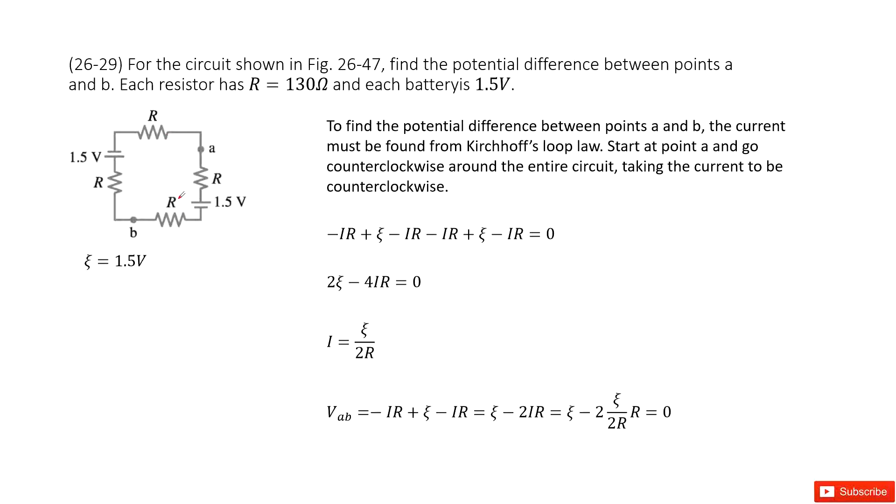to determine the potential difference between points A and B. Very straightforward - we need to find the current in this loop first so we can apply Kirchhoff's loop rule. We can see from the start, the current goes through this way.